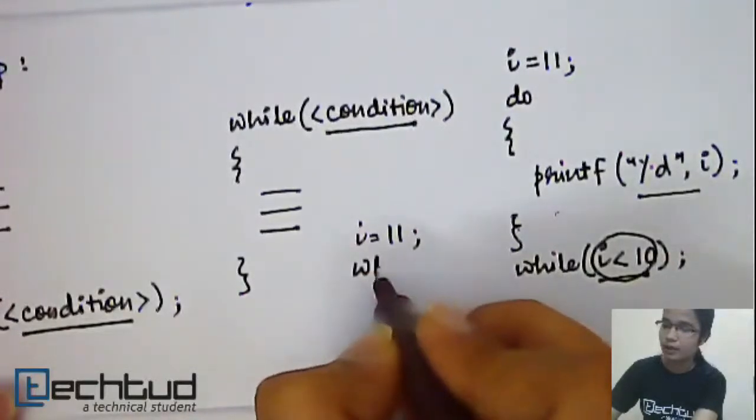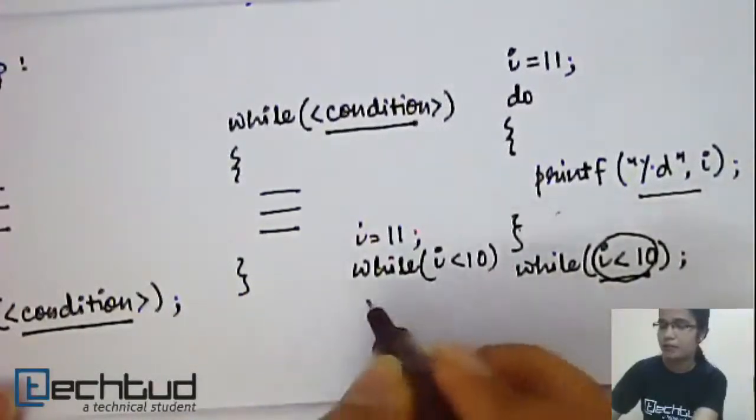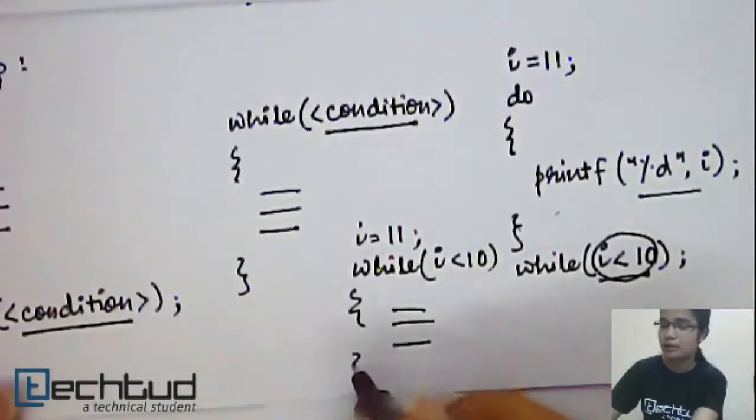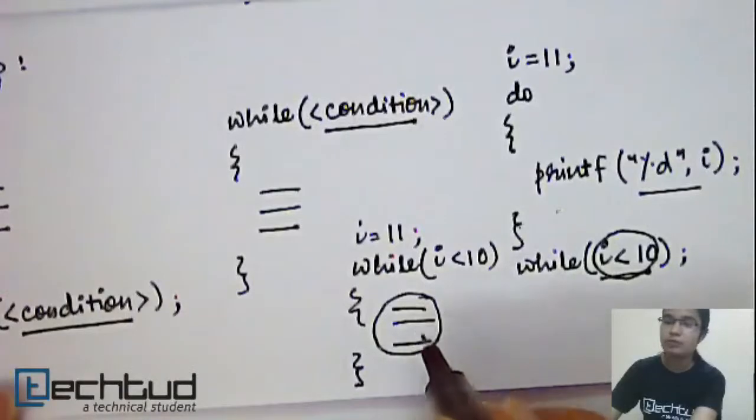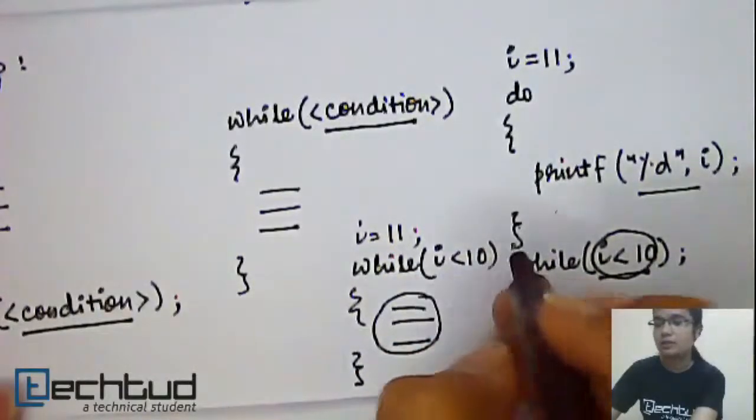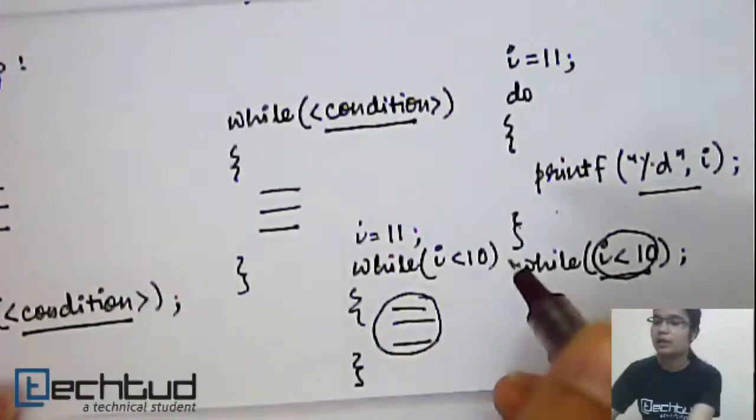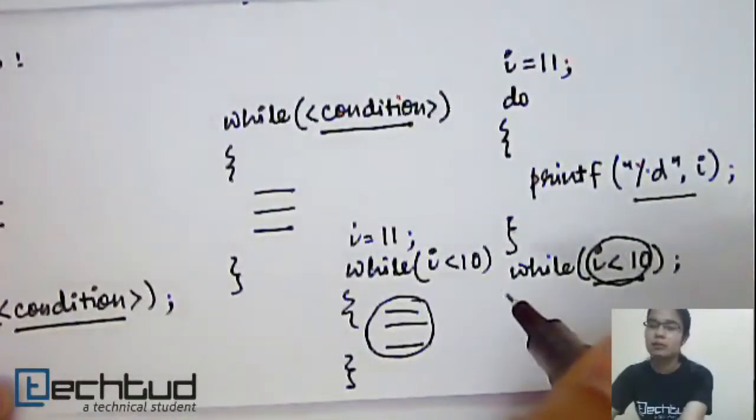But for while, what happened? If I have set the value of i as 11 and I have set the condition as i less than 10, anything written inside will never be executed. Because before execution of even the first iteration, the while loop checks for the condition.